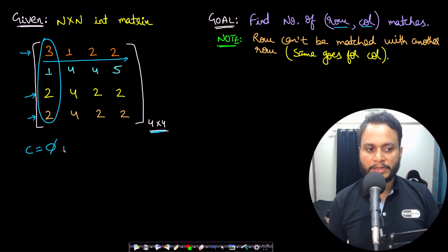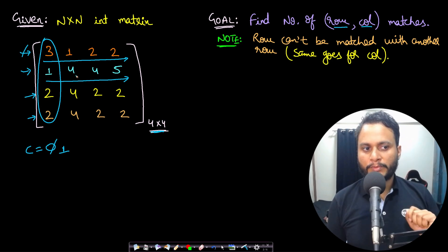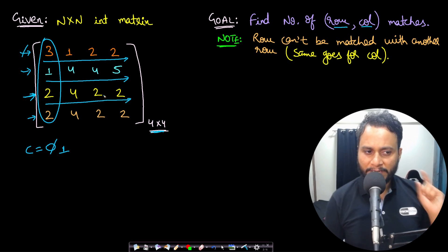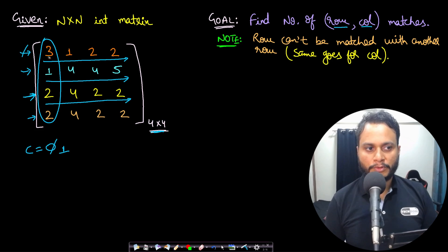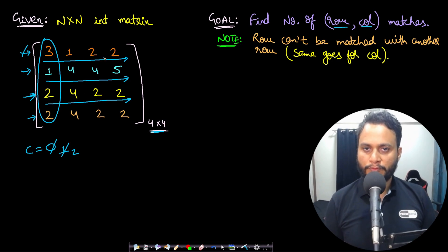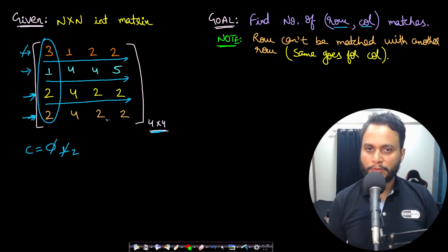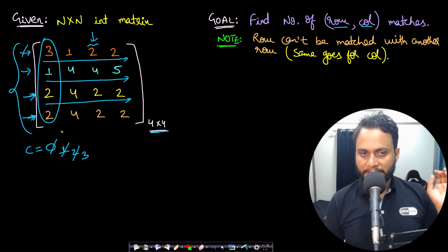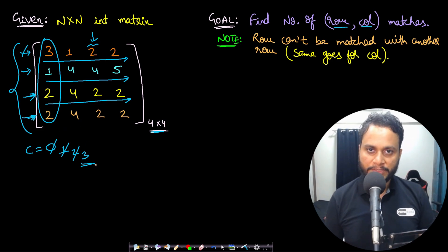Let's start matching. For row zero — 3,1,2,2 — there is exactly one column with the sequence 3,1,2,2, so count becomes one. For row one — 1,4,4,5 — there is no matching column. For row two — 2,4,2,2 — the third column matches, contributing one more. For row three — again 2,4,2,2 — the third column also matches, contributing one more. After checking all rows against every column, the total count of matches equals three.